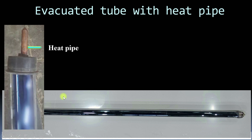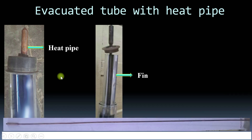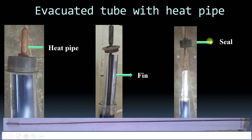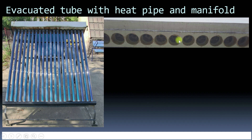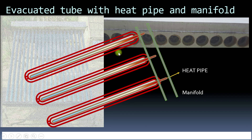A special type of evacuated tube collector with a heat pipe is also available. This is a copper heat pipe, and there are fins inside the evacuated tube. The heat pipe is sealed from top and bottom and carries a special fluid that has a very low boiling point and can easily be converted to vapor. These hot vapors can then be used for heating water. Multiple evacuated tubes are connected in a manifold for indirect heating of water, and the problem of scaling is eliminated in evacuated tubes with heat pipes.